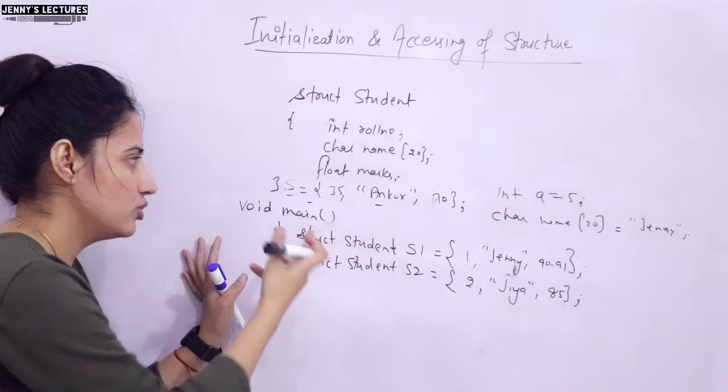To recap the initialization rules: the order of values must match the order of members. For partial initialization, the first members must be initialized — you cannot skip the beginning and initialize only the end. For example, if you write only '90.91', it will be assigned to roll number (an int), not to marks — giving a garbage value. You need to be careful about this.